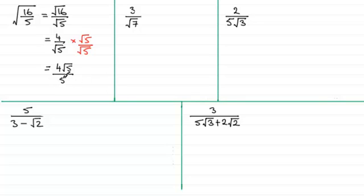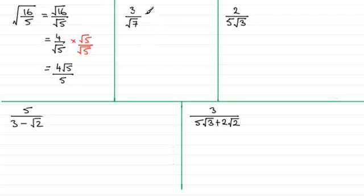You can see that we haven't got a square root in the denominator, and this is the kind of value that you'll see when you do this kind of sum on a calculator. Now I've got some more examples here. You might like to try this one: 3 over root 7. What do you think we have to do to rationalise this? I'll give you a moment to have a go — just pause the video and come back when you're ready.